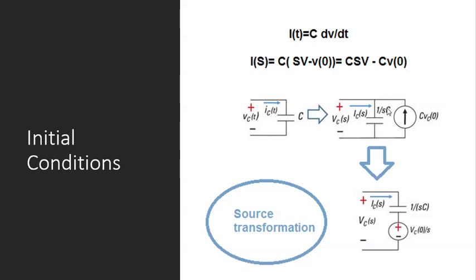So the current in the branch of the capacitor without initial condition will simply be Cs·V, because the impedance is 1/Cs, so V divided by 1/Cs gives Cs·V. And this is an independent current source with the value of C·V₀⁻. So the current in the main branch will be Cs·V, but since this one is coming from the other direction, it will be minus C·V₀⁻. So this equation derived from the Laplace table can be expressed in this circuit model. In short, we can model a capacitor with initial condition with a capacitor without initial condition in parallel with a current source with the value of C·V₀⁻.